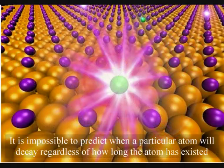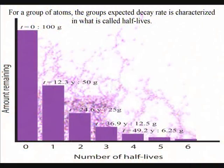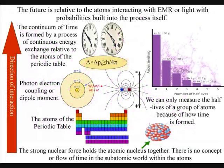It is impossible to predict when a particular atom will decay, regardless of how long the atom has existed. However, for a group of atoms the expected decay rate is characterized in what is called half-lives. The half-life represents a time after which half of the group's nuclei will have decayed. Mainstream physics has no objective or logical understanding of why we should have such a property as half-life when dealing with decaying atoms. But if time and the future itself is relative to atoms interacting with electromagnetic radiation or light, it would be logical that probabilities are built into the process itself — therefore we can't predict the decay of an individual atom and can only measure the half-life of a group of atoms.